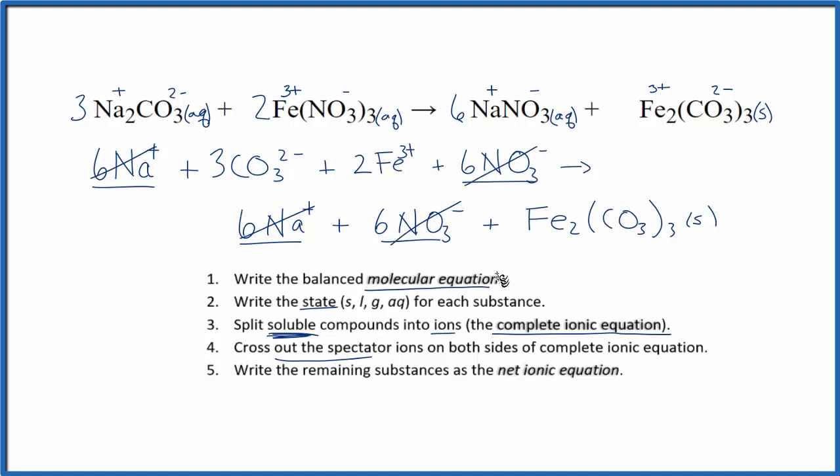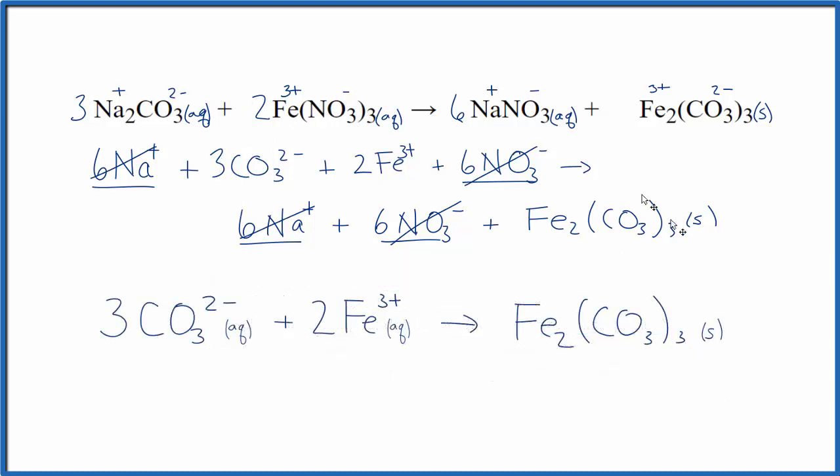And once we're done with that, now we can write the net ionic equation for Na2CO3 plus Fe(NO3)3, the sodium carbonate and iron three nitrate. So this is the balanced net ionic equation for Na2CO3 plus Fe(NO3)3. And this is Dr. B. Thanks for watching.